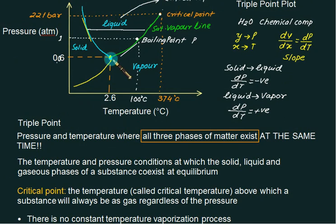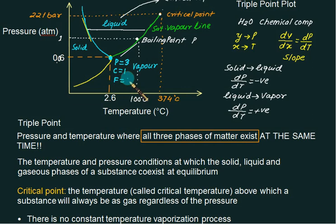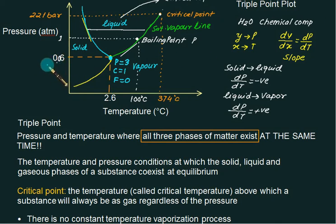Now consider the triple point, where all three phases exist together. Phase P equals 3, component C equals 1, so degree of freedom equals 1 minus 3 plus 2 equals 0. At the triple point, we do not require either temperature or pressure — it is a unique, special point in the T-S diagram. There is only one such point, at a pressure of approximately 6 kilopascals and a temperature of approximately 0 degrees Celsius.